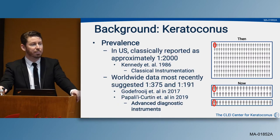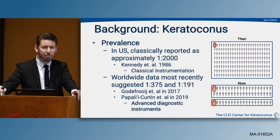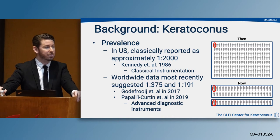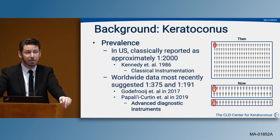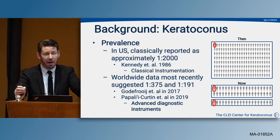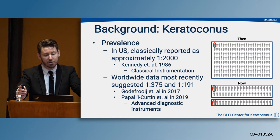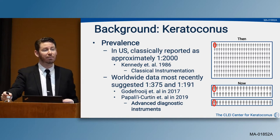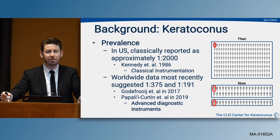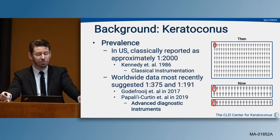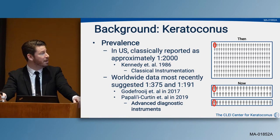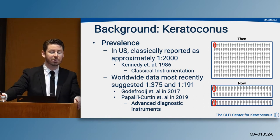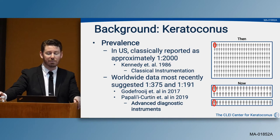The prevalence in the United States has been classically reported as one in 2,000 individuals. However, this was reported in a 1986 Kennedy study using classical instrumentation such as slit lamp findings, scissor reflex on retinoscopy, and keratometry. Worldwide data most recently has suggested prevalence is more like 1 in 375 or even 1 in 191 individuals, attributed to advanced diagnostic instrumentation not previously available.